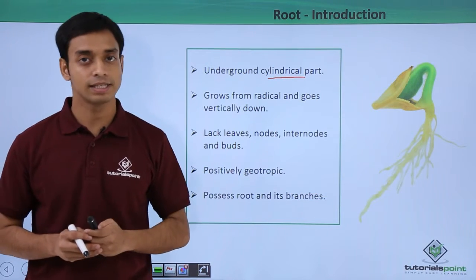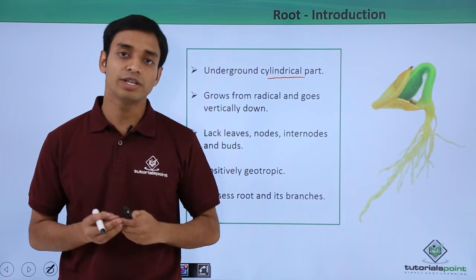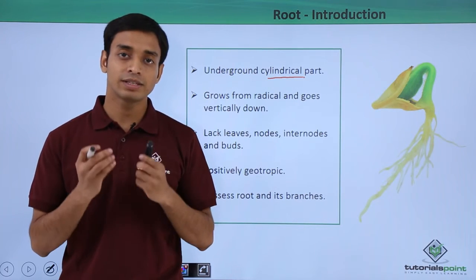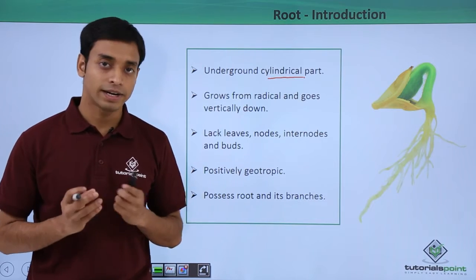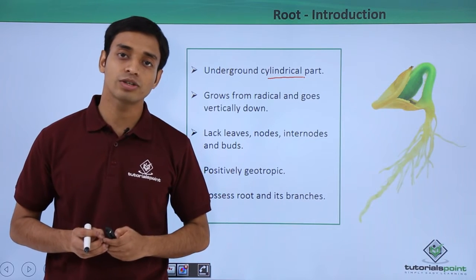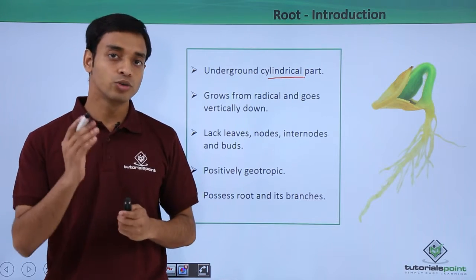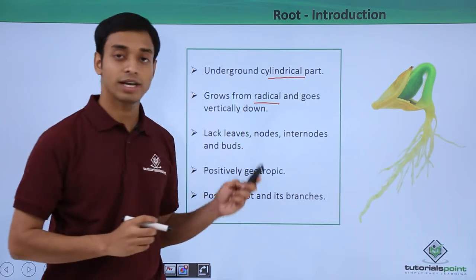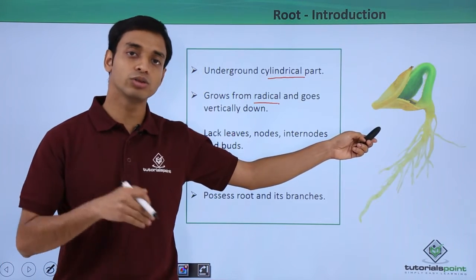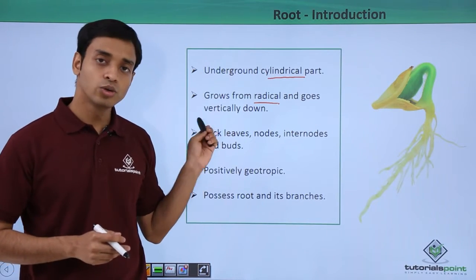When a seed germinates — that means under favorable conditions like water, sunlight, and air, the seed starts forming a new plant — two small structures arise: the first one is the radicle and the second is the plumule. The roots arise from the radicle, which is the portion that goes vertically downwards into the soil.